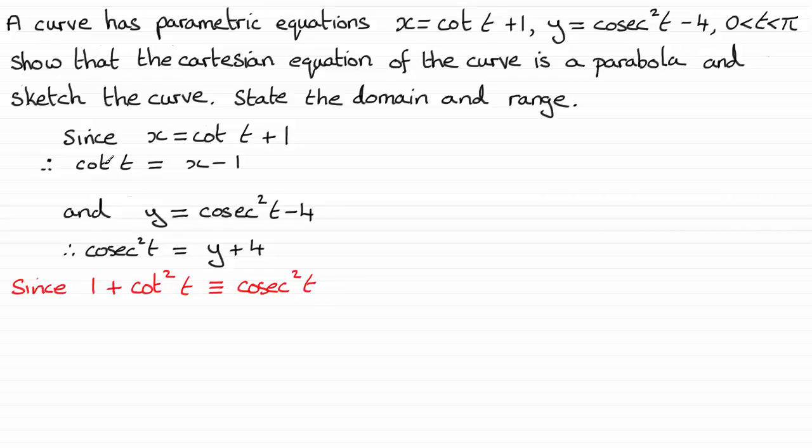So we're going to have then 1 plus cot squared t which is all of x minus 1 squared. And that's going to be equal to cosec squared t, which we can see is y plus 4.